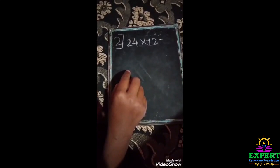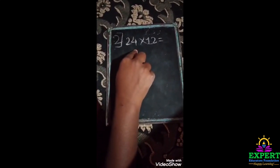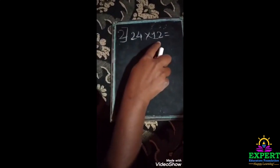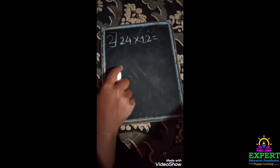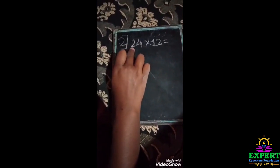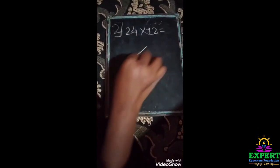Here we have taken two digit numbers now, 24 into 12. So you say how to draw here 24 lines and 12 lines? So don't worry, we will see. Now here we have to draw two and four. Here we will draw two.